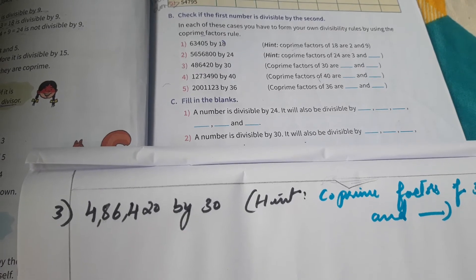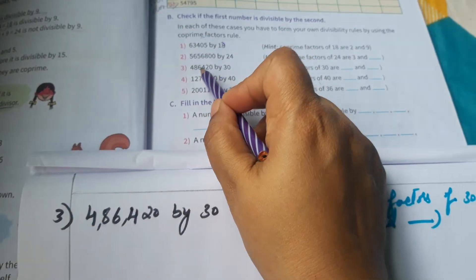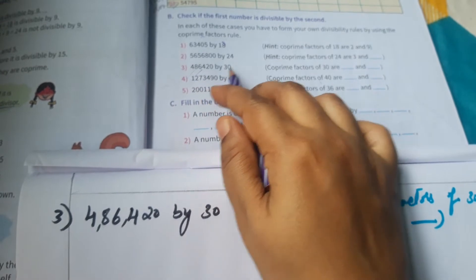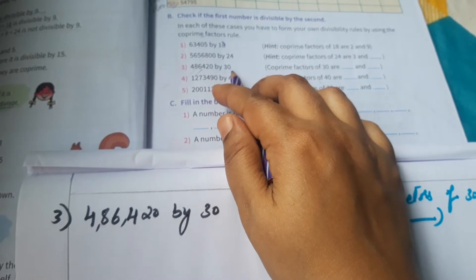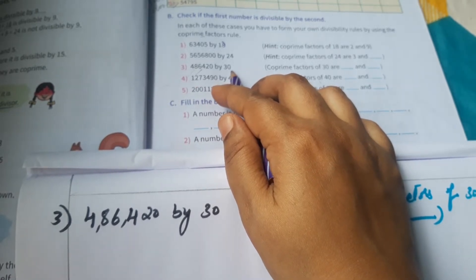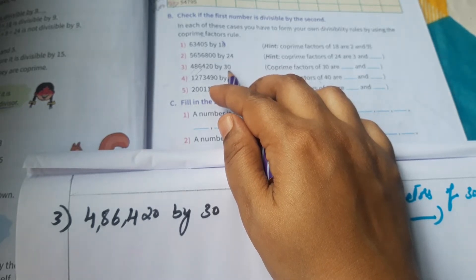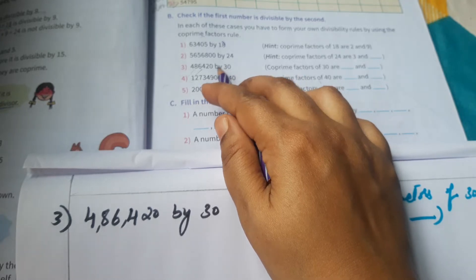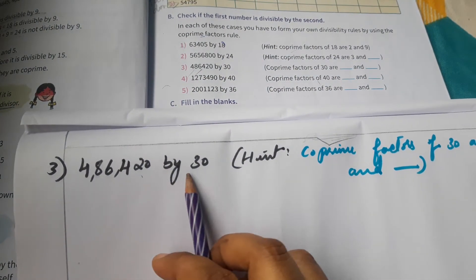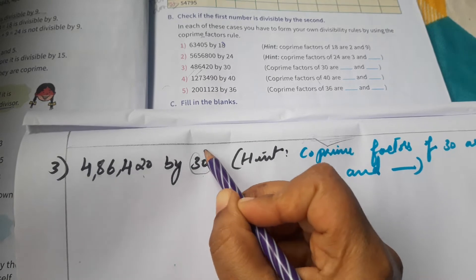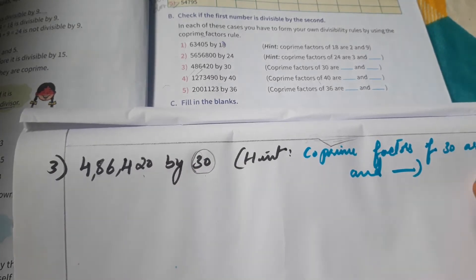Third question: 4,86,420 divided by 30 — is it perfectly divisible or does it give a decimal? It is not necessary to directly check with 30. We can find the co-prime factors of 30 and verify with those simpler numbers. The divisor is 30.